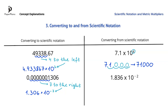For the next number, we will also start by writing down 1.836. Since here the power of 10 is negative 2, we will move the decimal point two places to the left. Then we'll fill in the empty space with a zero, and put another zero in front of the decimal place, to get 0.01836.